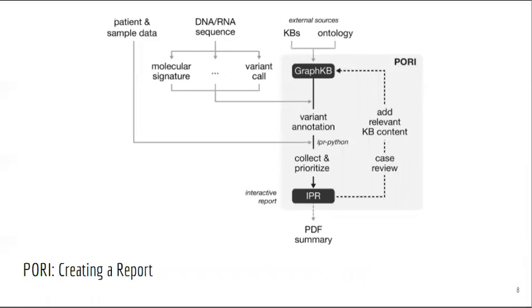GraphKB is primarily used to annotate variants with their implications according to literature. Variants and patient data are collected, the variants are then matched against GraphKB, and the resulting content is aggregated and prioritized via the report loader before being presented to the reporting application. Because GraphKB and IPR are highly integrated, we are able to motivate expedient entry of the most relevant content into our knowledge base. The analyst performing the review of a report in IPR can add any content they might come across not already in the knowledge base to GraphKB and regenerate the report in a matter of minutes, providing a more targeted approach to curation.